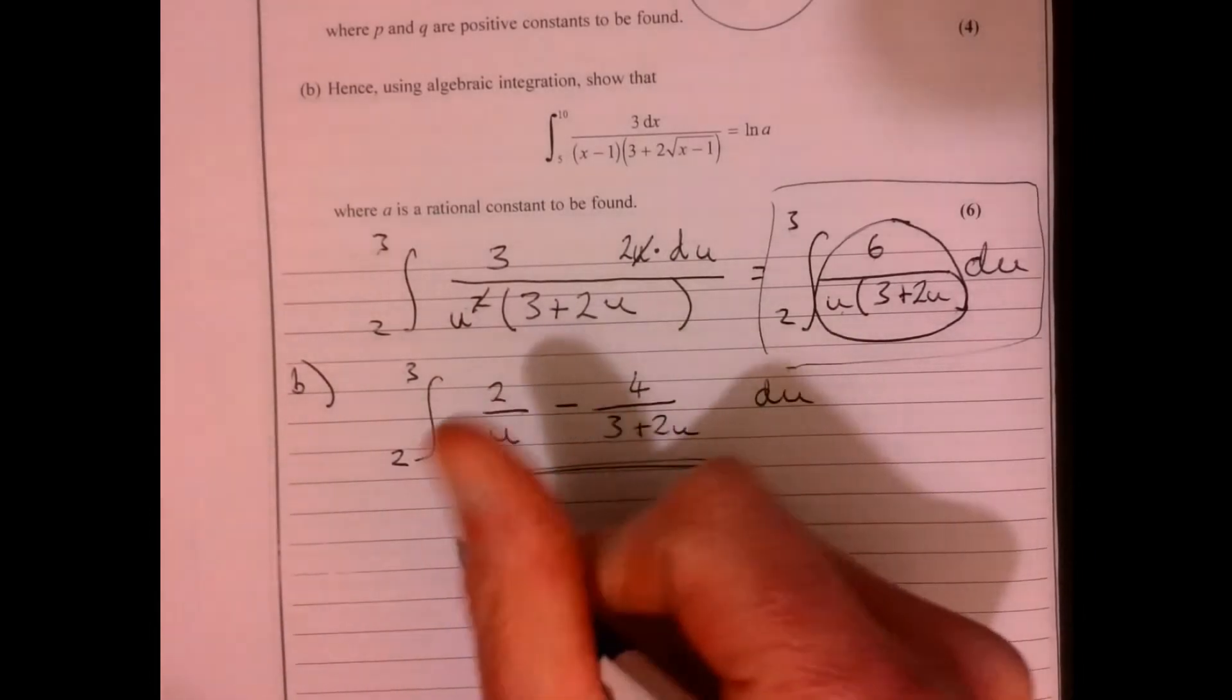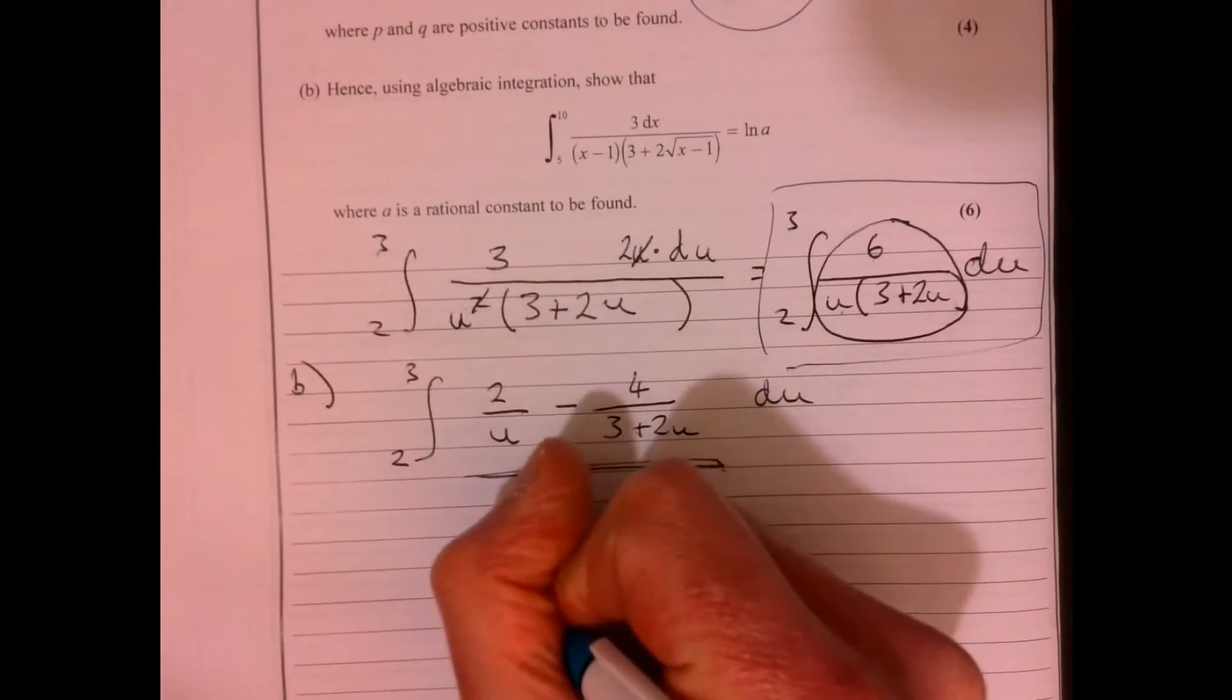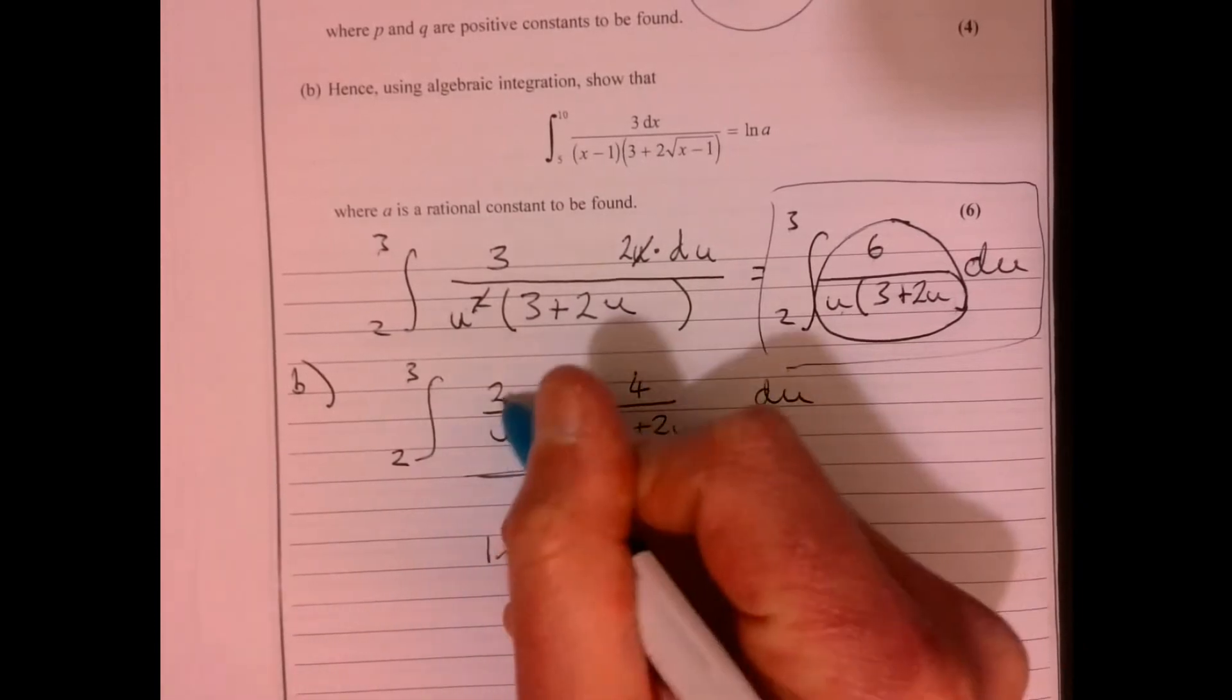If I integrate this, it's just going to be, you should recognise this. It's just going to be ln u multiplied by the two.